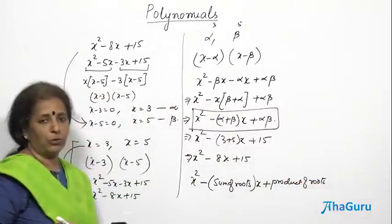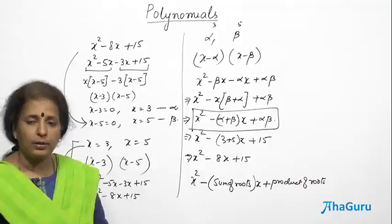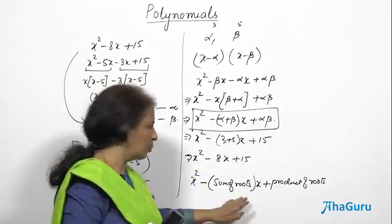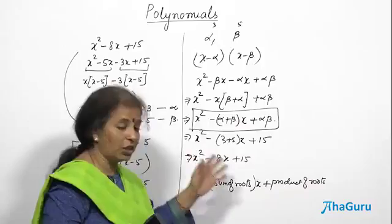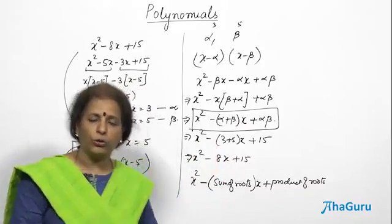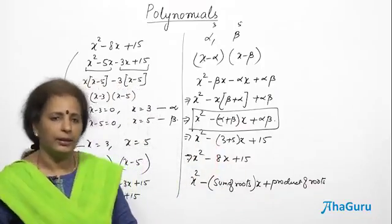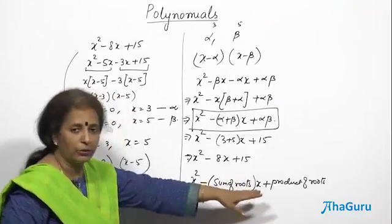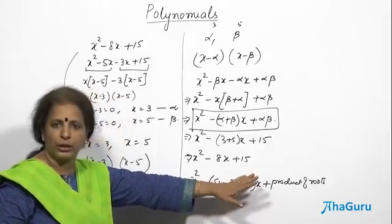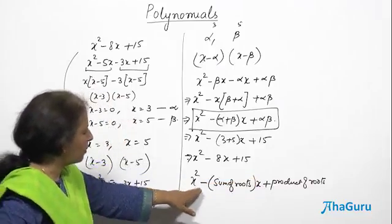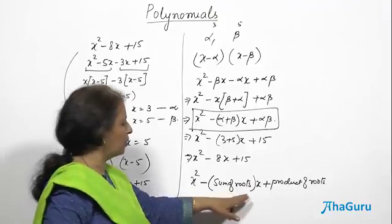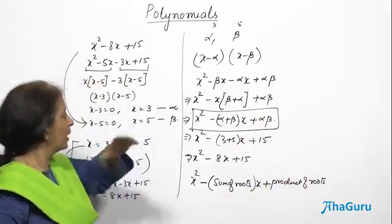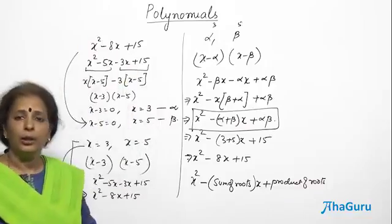Please remember — some books will say roots, some books will say zeros. It doesn't make any difference. Both roots and zeros mean the same thing. So zero of the polynomial and root of the polynomial are the same thing. So the formula may say sum of the zeros or sum of the roots — just don't get confused. x squared minus sum of the roots times x plus product of the roots gives me directly the polynomial.